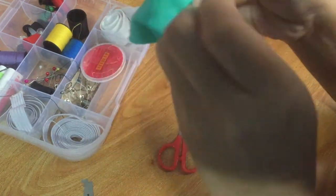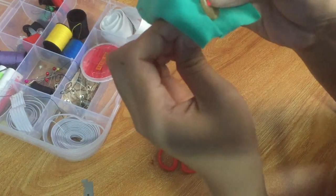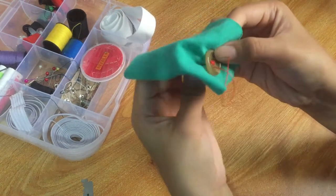Push the threaded needle up through the fabric and through the hole in the button. Pull the thread all the way through one stitch.